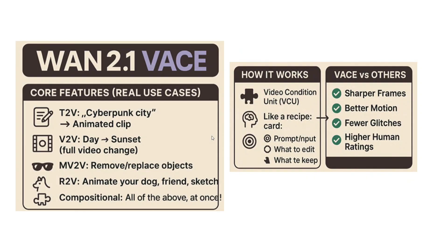Talking about Waise versus others: sharper frames are generated as we saw in the examples, better emotion, fewer glitches, and higher human ratings. There was a point in the paper where they mentioned that even humans are not able to identify whether a video was generated through Waise or not.